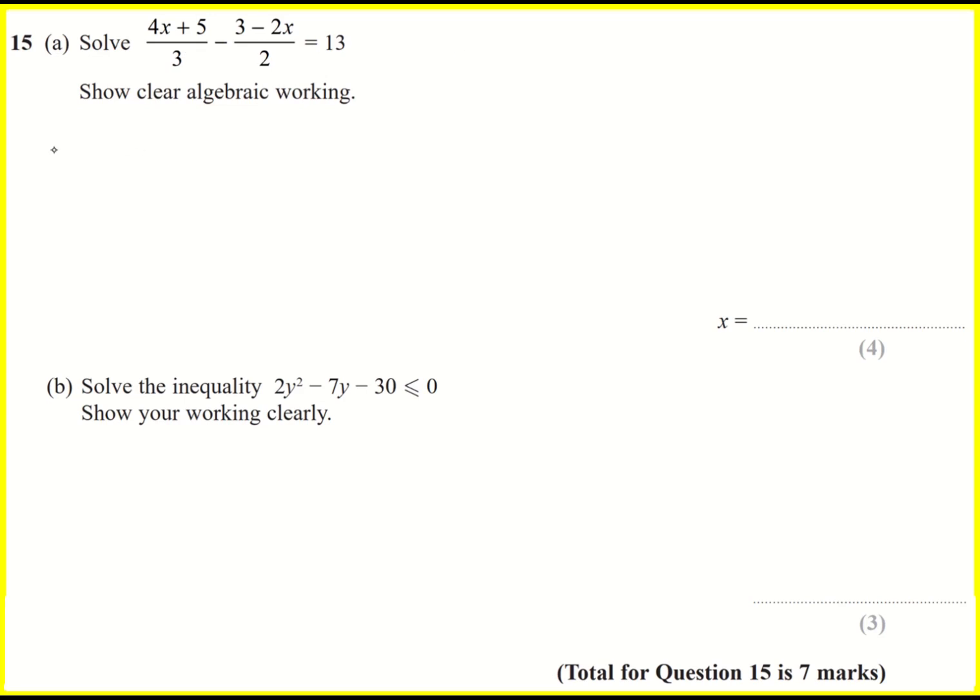An algebraic fraction to solve. So first thing we could do is put it over a common denominator. 4x plus 5 multiplied through by 2 to make it over 6 and this one by 3 to make it all over 6 as well.